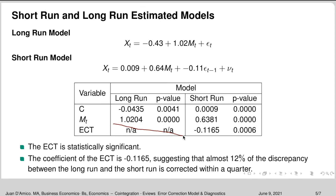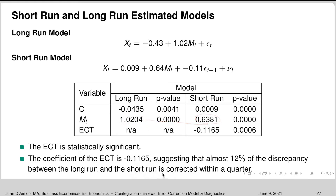The error correction term does not appear in the long-run model, but in the short-run model we have included it. It is negative 0.11, between negative 1 and 0, and is statistically significant. If it were not significant, the short-run model would not be appropriate. This coefficient of negative 0.11 suggests that approximately 12% of the discrepancy between the long-run and short-run is corrected within a quarter — since we are working with quarterly data. For monthly or yearly data, it would correct that percentage per month or per year.